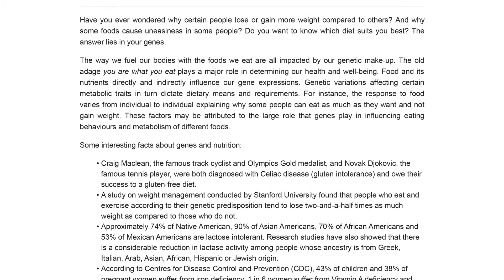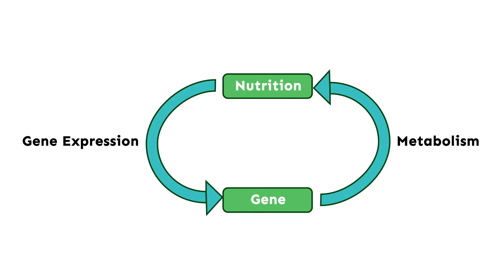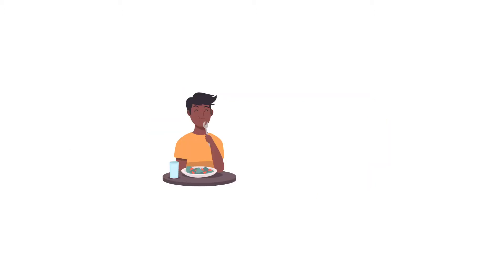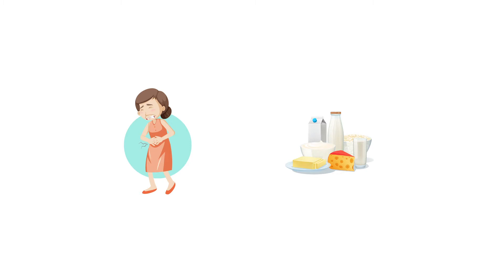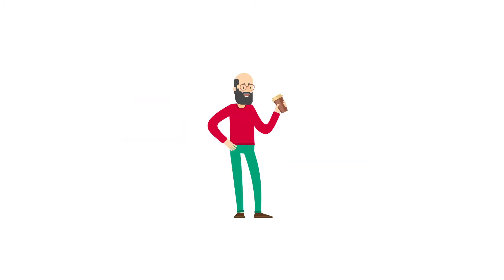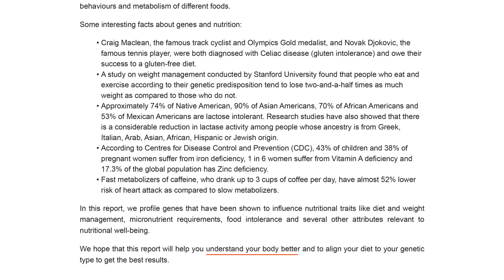The relationship between your genes and your diet is a two-way street: what you eat affects your gene expression, and the gene variants you carry affect how you process the nutrients in your diet. These genetic variants also answer questions like why some people eat a lot and don't put on weight, why certain people can't consume dairy without experiencing gastrointestinal troubles, and why some people experience caffeine jitters after just one cup of coffee. This report aims to help you better understand your body and align your diet to your genetic type.